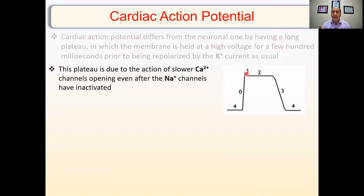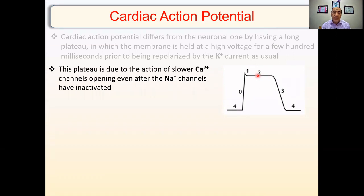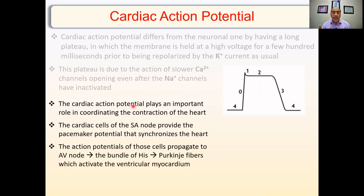The plateau is due to influx of calcium and efflux of potassium. Positive calcium in and positive potassium out cancel each other, so there is no change in the voltage of the cell. The action potential will stay almost similar for some milliseconds - this is called the plateau, and it is very characteristic for the cardiac action potential.